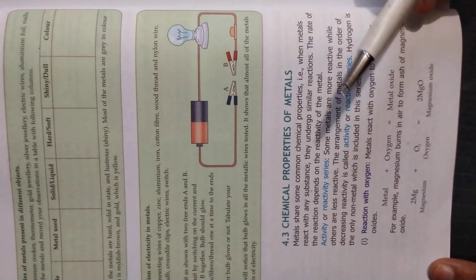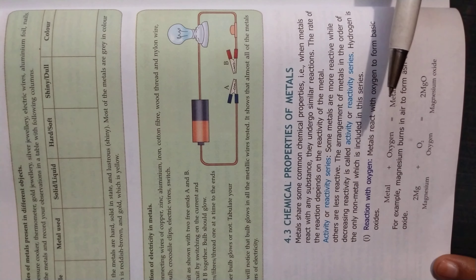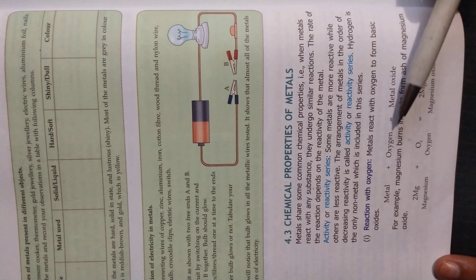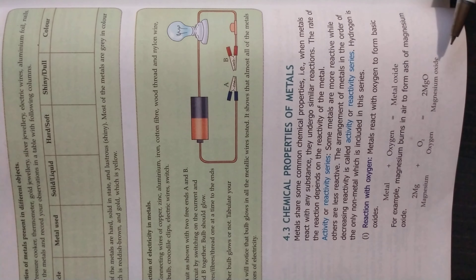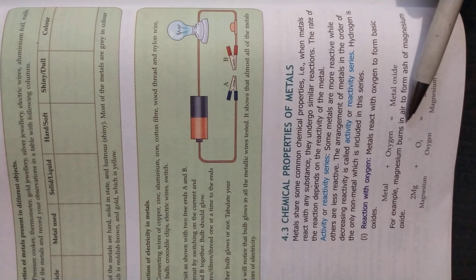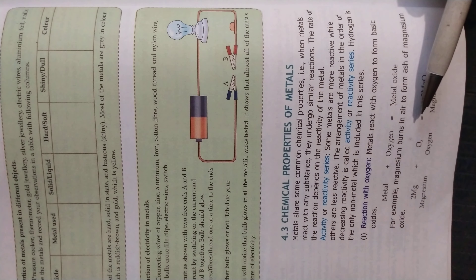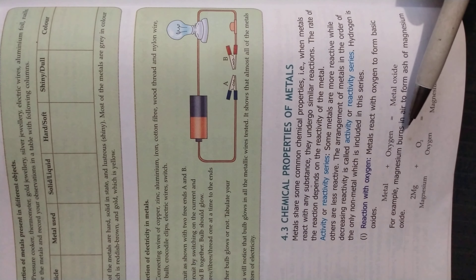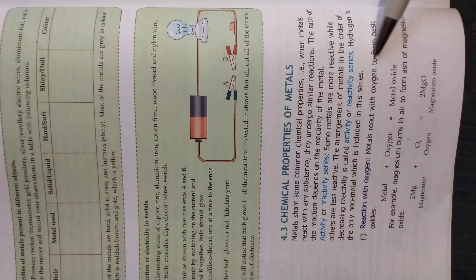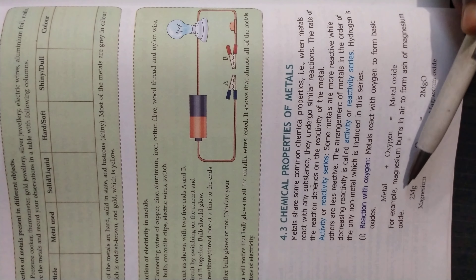Today we are going to discuss the chemical properties of metals. Generally, metals react with other elements or substances to form different chemical compounds. For example, when a metal reacts with oxygen, it forms a metal oxide. In daily life, an iron rod reacts with oxygen and forms a layer of rust — which is iron oxide — appearing as a brownish layer around it.